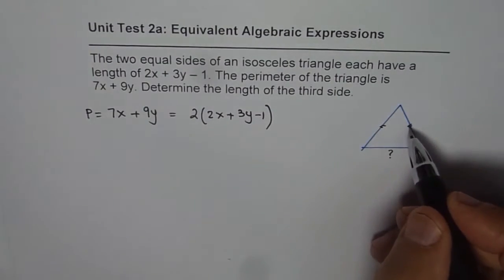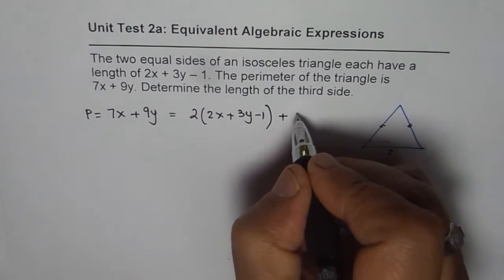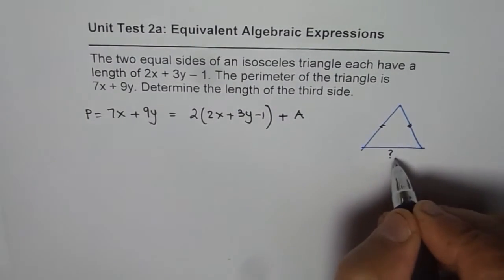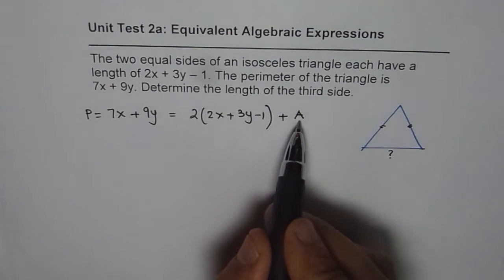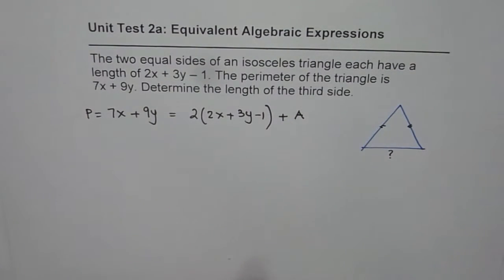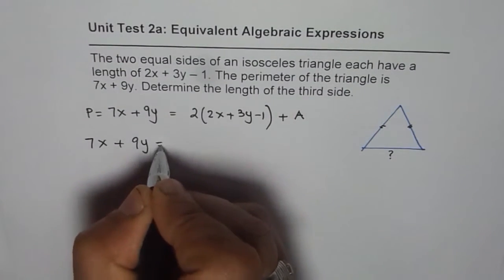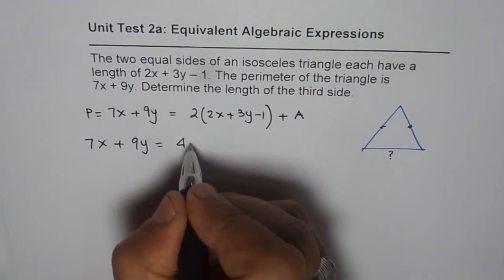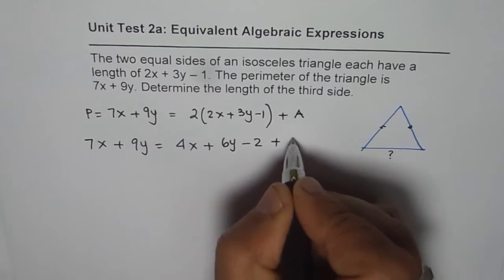That is the sum of two sides. Let us say a polynomial A represents the third side. We will find the value of A from this algebraic expression. So what we have here is 7x + 9y equals—let us expand—4x + 6y - 2 + A.